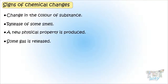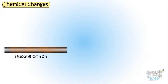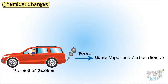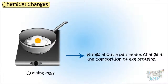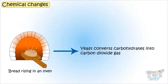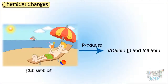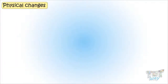Now let's see some examples of chemical changes: rusting of iron, where iron oxide is formed; burning of gasoline, where water vapors and carbon dioxide are formed; cooking eggs; bread rising; milk souring; sun tanning. All these are examples of chemical changes.